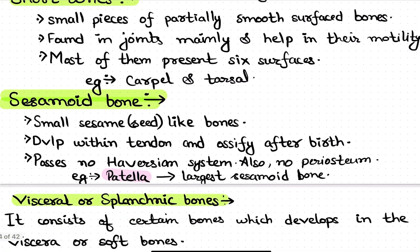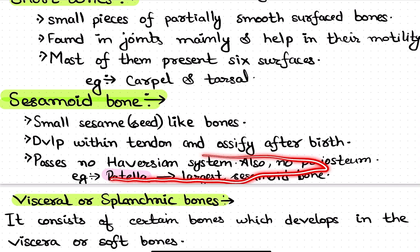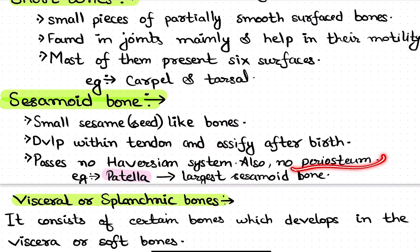Sesamoid bones are named after sesame seeds due to their similar appearance. They develop within tendons and ossify after birth. The patella is the largest sesamoid bone. Sesamoid bones have no Haversian system and no periosteum.